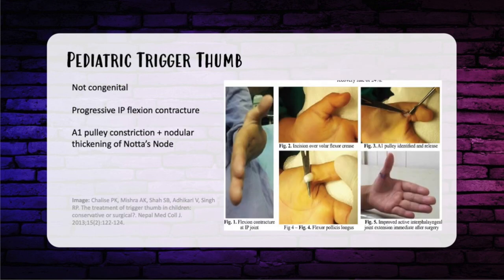The last anomaly is pediatric trigger thumb, but it is not a congenital hand abnormality — it is not present at birth. It's a progressive IP flexion contracture caused by A1 pulley constriction with nodular thickening of the FPL — the flexor pollicis longus — called the Notta's node. There's a short observation period of about six months, during which about one-third to half of patients resolve. If not, surgical release before age five is recommended.